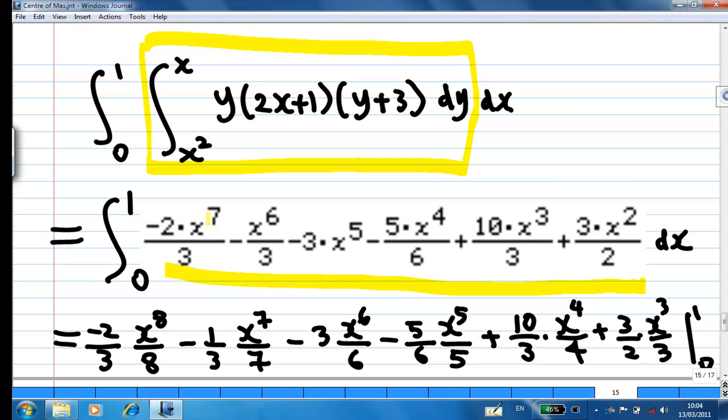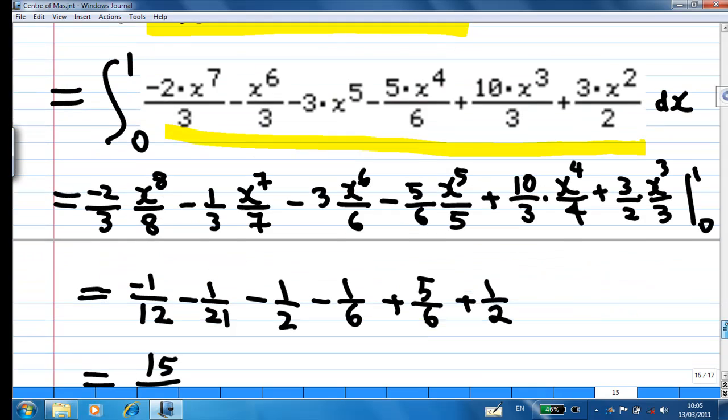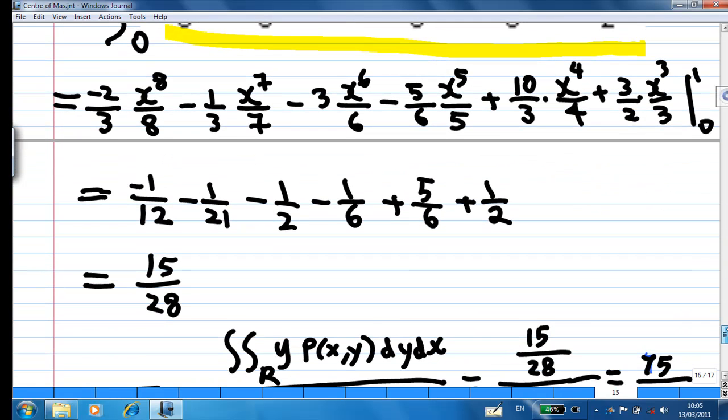So integrate with respect to x again. Integrate x⁷, it's x⁸ over 8. Integrate x⁶, you get x⁷ over 7. Integrate x⁵, you get x⁶ over 6. Integrate x⁴, you get x⁵ over 5. Integrate x³, you get x⁴ over 4. Integrate x², you get x³ over 3. And then you substitute the limit x equal to 1 and x equal to 0 inside.